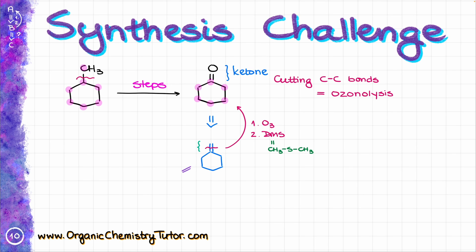One, where the leaving group is going to be on my terminal carbon, so that would be something like this, and another one is going to be where the leaving group was sitting on the tertiary carbon, so that would have been something like that.